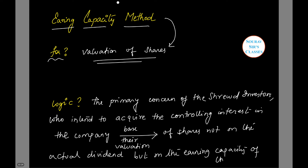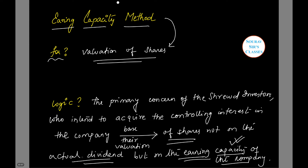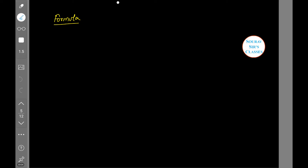So if you are an investor who is very much concerned about your profit, and if you know that the earning capacity of the company is much higher than the actual dividend declared by the company, then you will ask the company to base your valuation of shares on the earning capacity of the company and not on the basis of the actual dividend.